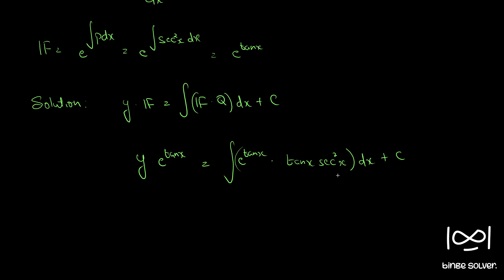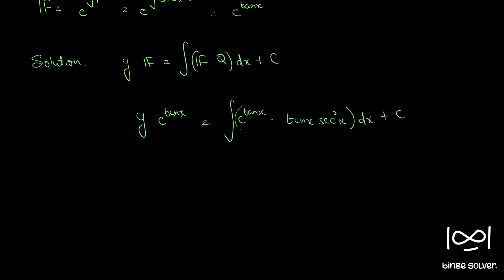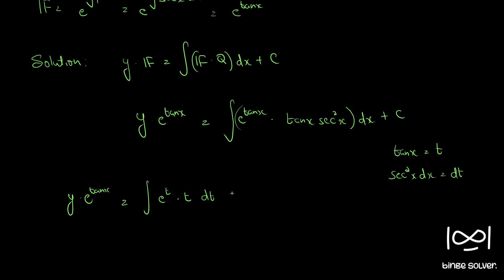To integrate this, put tan x equal to t. Then sec²x dx equals dt. So this becomes y · e^(tan x) = integral of e^t · t dt, since tan x equals t and sec²x dx becomes dt.